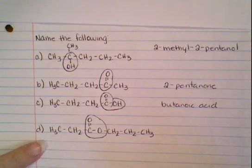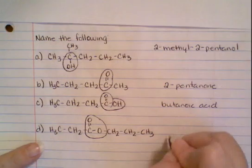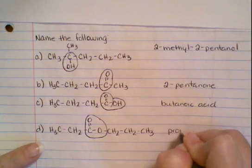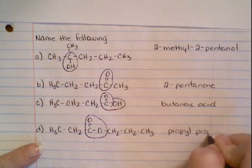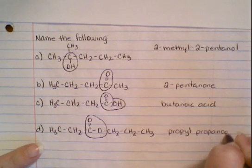Now how does this last one fall in? It's a C double bonded to an O and it's got an O next to it. So when you think about that, go find out for sure which functional group that is, and then you want to name it. So it's going to be a propyl propanoate.